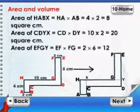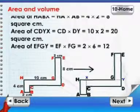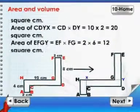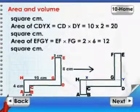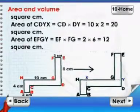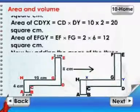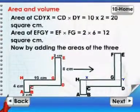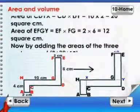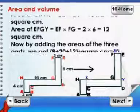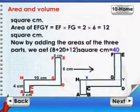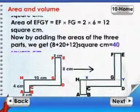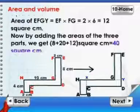which is equal to 10 into 2 or 20 square centimeters. Area of EFGY is equal to EF into FG, which is equal to 2 into 6 or 12 square centimeters.